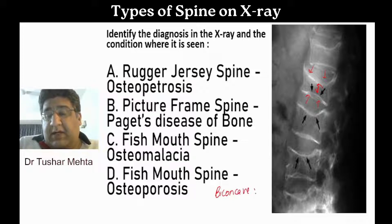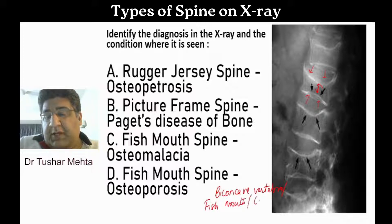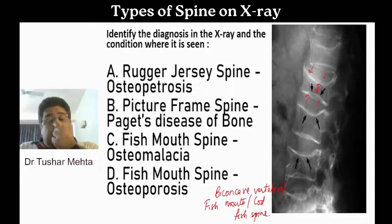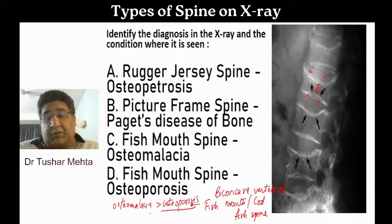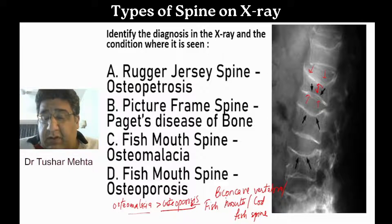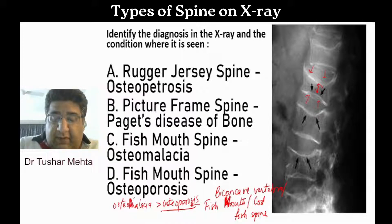We are dealing with a bi-concave vertebra, which is also called fish mouth spine and codfish spine. This is seen in two conditions: osteomalacia and osteoporosis. If more than one option can be correct, choose both, but if you have to choose one, always remember M for mouth is more classical of M for Malacia.